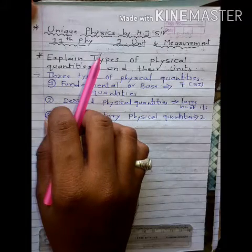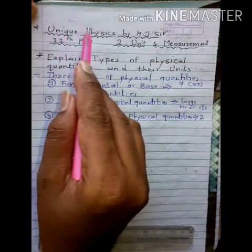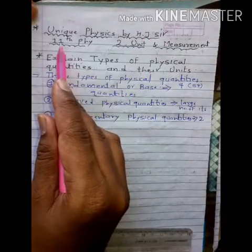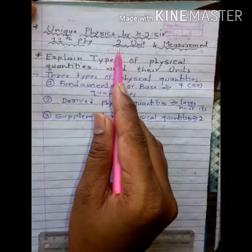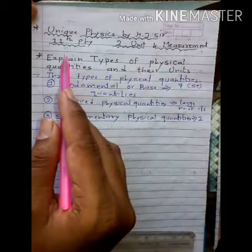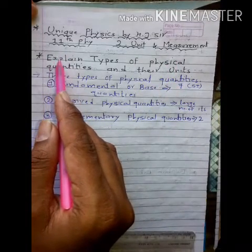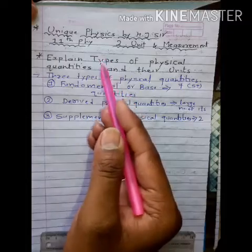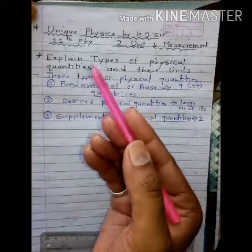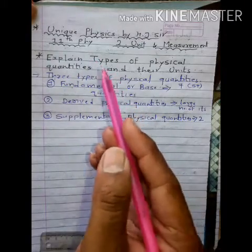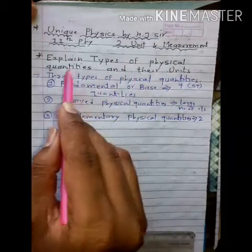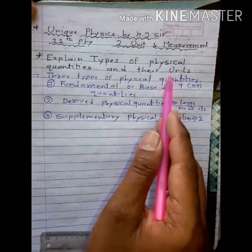Dear students, welcome to my YouTube channel Unique Physics by H.J. Sir. Here we discuss eleventh physics chapter number two, unit and measurement. Last time we explained physical quantity and its example, as well as unit and system of units. In this video we will explain types of physical quantities and their units.